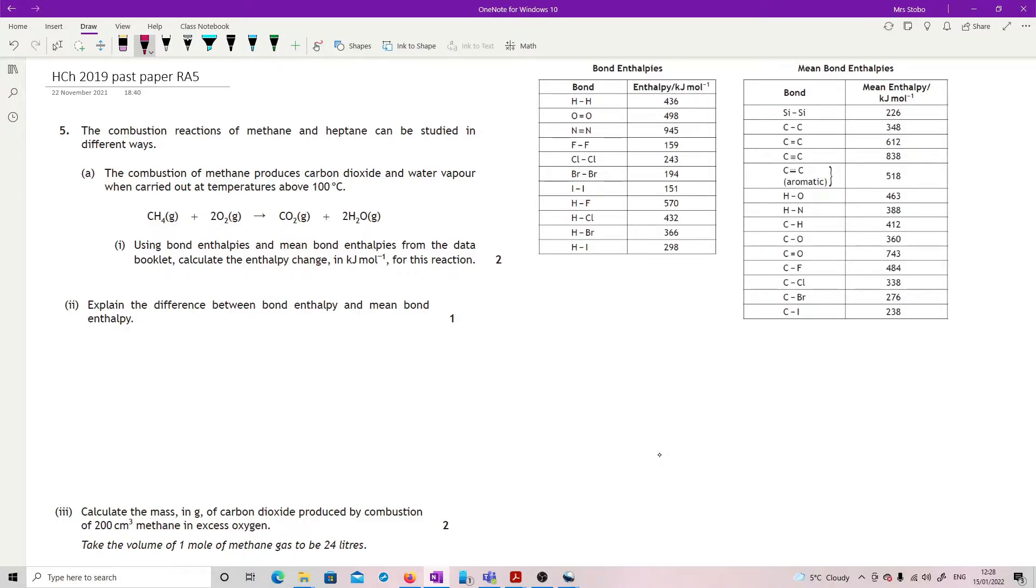Using bond enthalpies and mean bond enthalpies from the data book, calculate the enthalpy change in kilojoules per mole for this reaction. I have obviously just over here pulled out the whole thing. I personally find it nice to draw out the bonds just so I'm clear on what I'm doing. So I am going to break all of these and then after I've finished breaking all of these I'm going to make one of these, or two of these in the carbon dioxide, and I'm going to make two waters. So I'm going to make four of those.